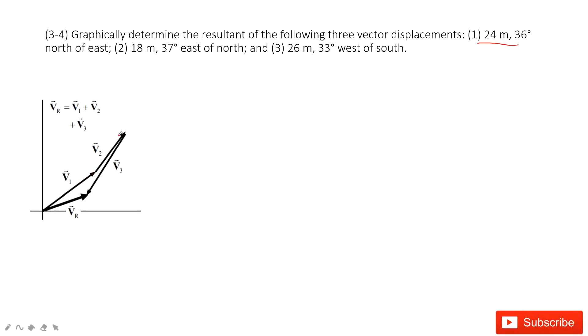And v2, it tells you the magnitude and the angle theta. It also tells you v3 is 26 meters west of south. We need to pay attention to west of south. So west to the south, it's pointing back.